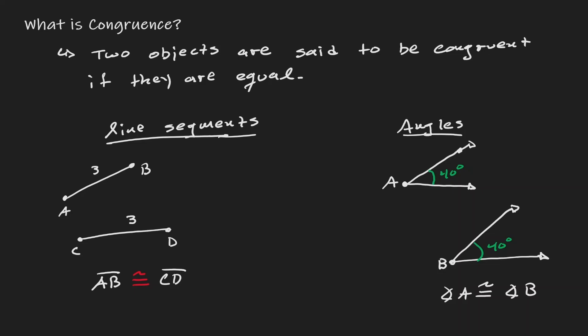But now we want to go one step further. Now we don't want to just look into line segments and angles — we want to take a look at big objects: circles, triangles, squares. And that's what we're going to be discussing today: how can we say that two objects are equal to each other?